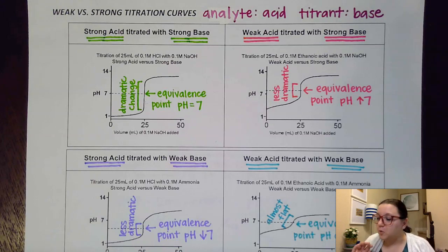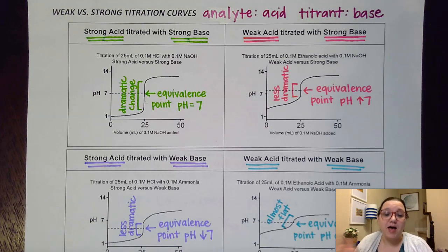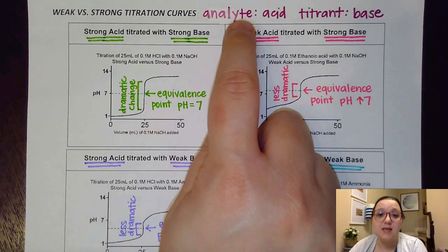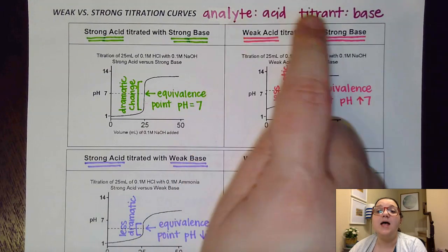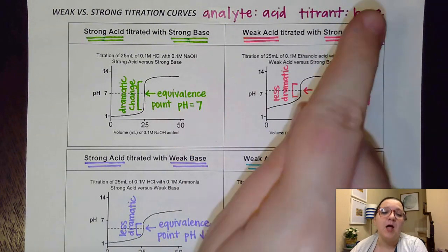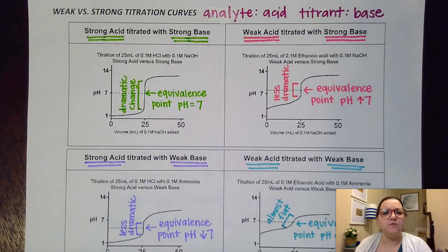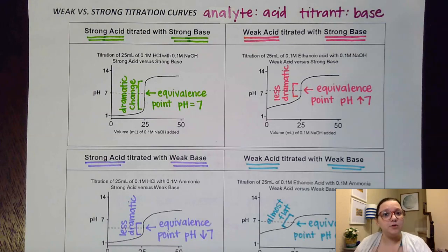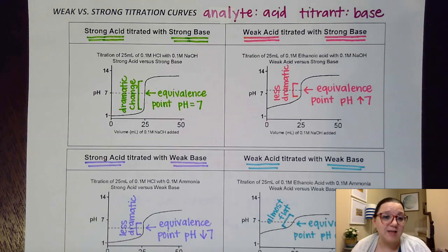We are going to look at four combinations of acid with base. However, in all four of these, you will notice that the acid is the analyte and the titrant is the base. If you were to flip-flop that, what you would see is mirror images of all of these graph shapes. However, the traits that we're going to talk about would be exactly the same.